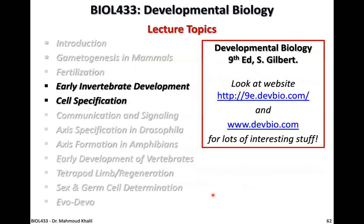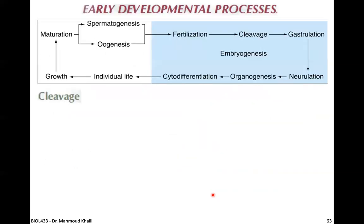Now we'll discuss early invertebrate development and cell specification. Development starts with an adult individual undergoing spermatogenesis or oogenesis to produce gametes. Upon fertilization, the embryo undergoes cleavage, followed by gastrulation, then neurulation, organogenesis, and cytodifferentiation — all under the umbrella of embryogenesis. We have finished fertilization and now move to the second developmental stage: cleavage.